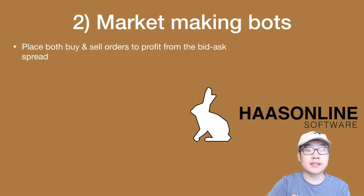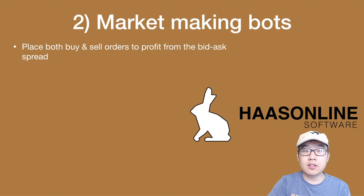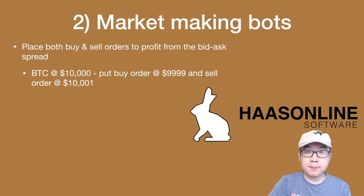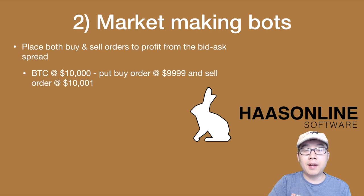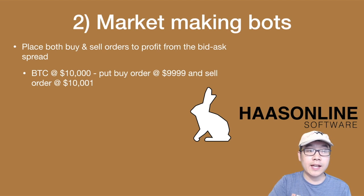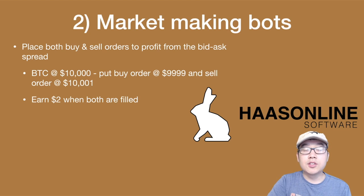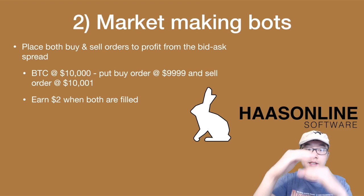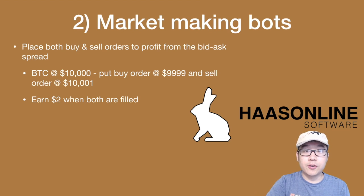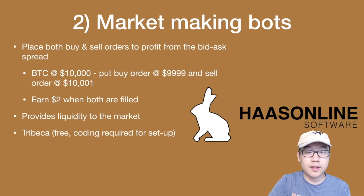Number two is market making bots. These work by placing both buy and sell orders to profit from the bid-ask spread. For example, let's say Bitcoin is currently trading at $10,000. You put in a buy order at $9,999 and a sell order right above it at $10,001, so you earn the $2 difference when both are filled. By utilizing this method, you're providing liquidity to the market.